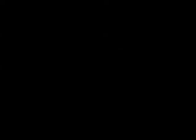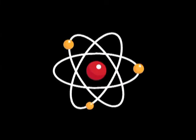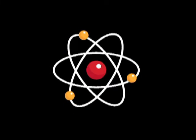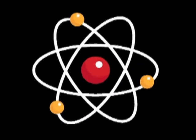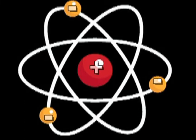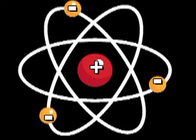All matter in the universe is made up of atoms. An atom is like a small solar system whose nucleus and satellites have electrical charges basically of two types: positive and negative. Positive charges are in the center of the atom, also called the nucleus. Negative charges revolve around the nucleus, and each atom has an equal amount of positive and negative charges.